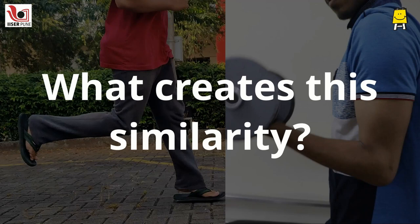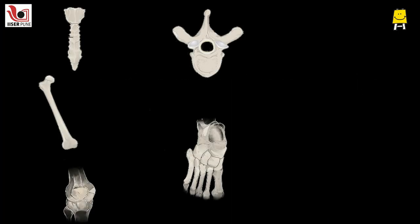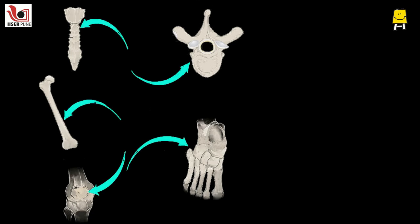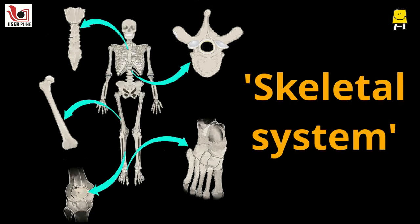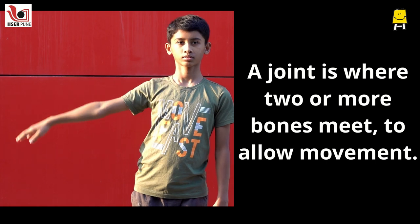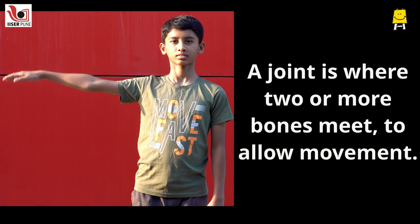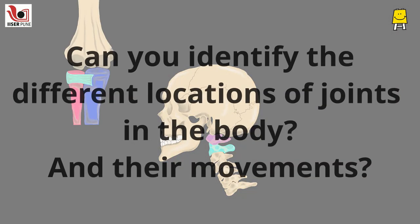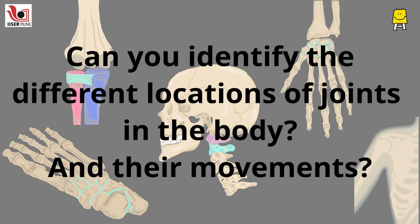How do you think all these movements are possible? Well, as you know, all the bones in the body together form our skeletal system. They give the body shape and support. A joint is where two or more bones meet to allow movement. Can you identify the different locations of joints in the body and their movements?